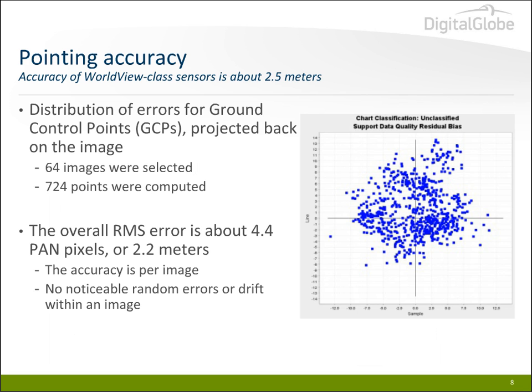Another important characteristic of the sensor is the pointing accuracy and the horizontal accuracy. The current accuracy of WorldView-class sensors is about 2.5 meters. This chart shows the spread of errors as measured with ground control points. There isn't really much bias, and the spread is confined with RMS errors of about 4.4 panchromatic pixels, which translates into about 2.2 meters.